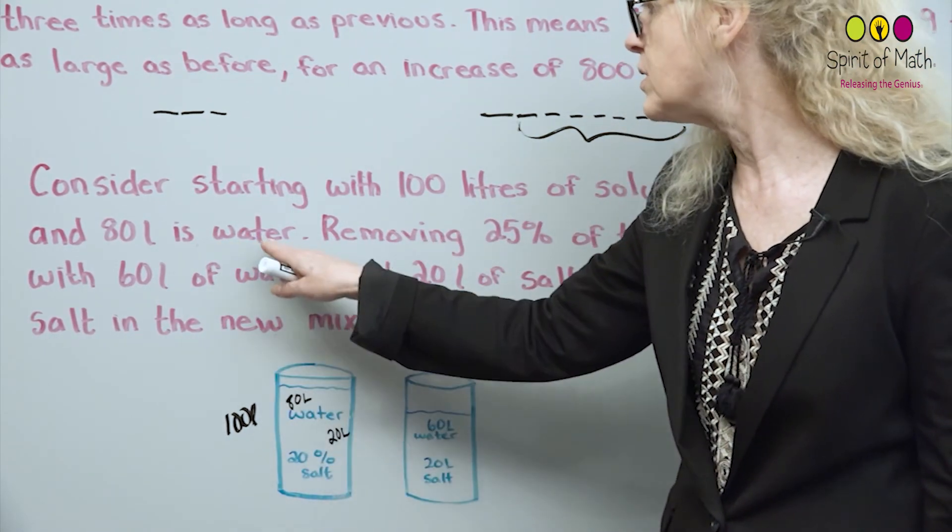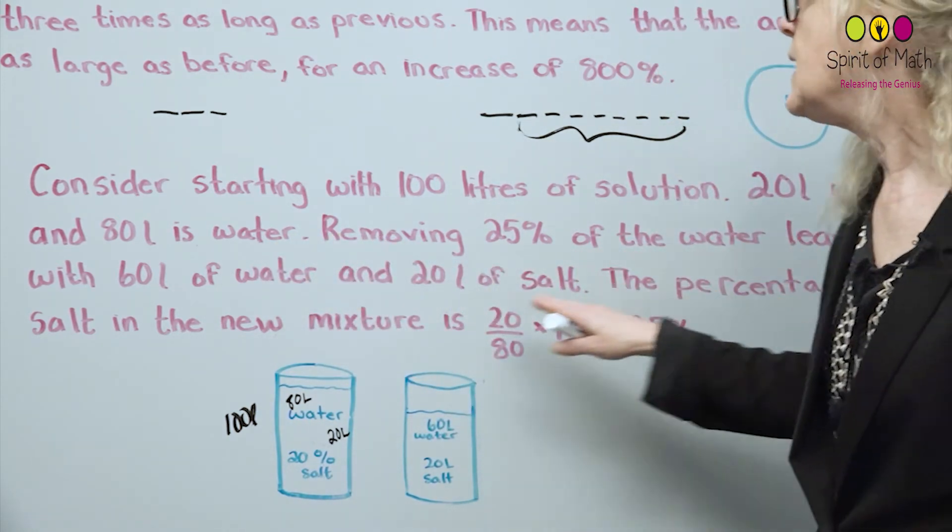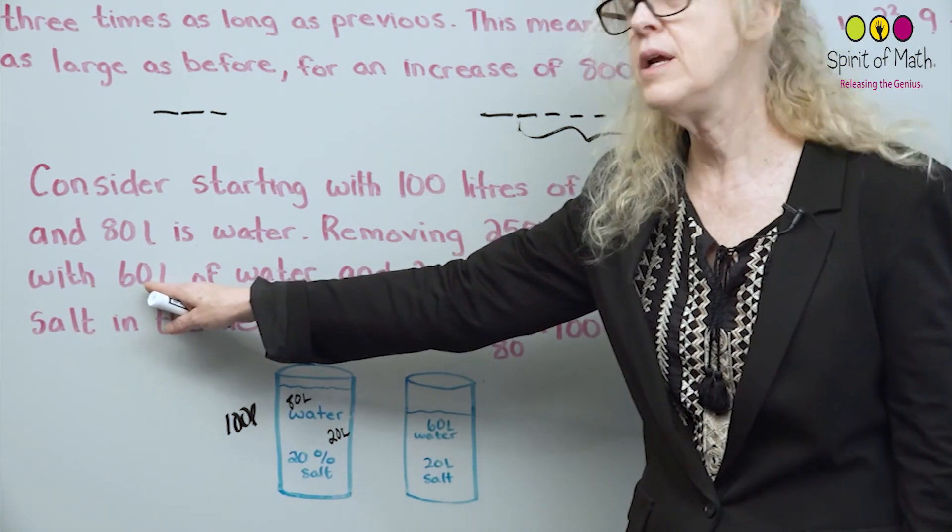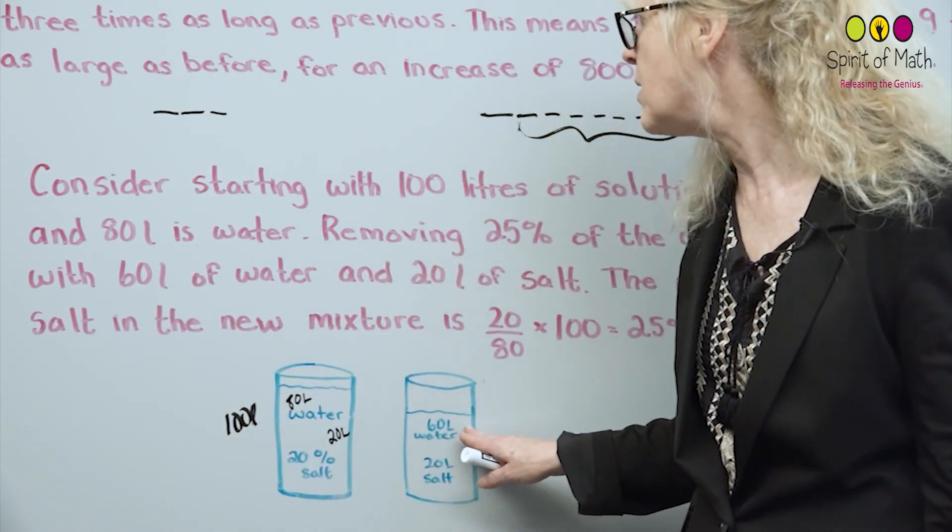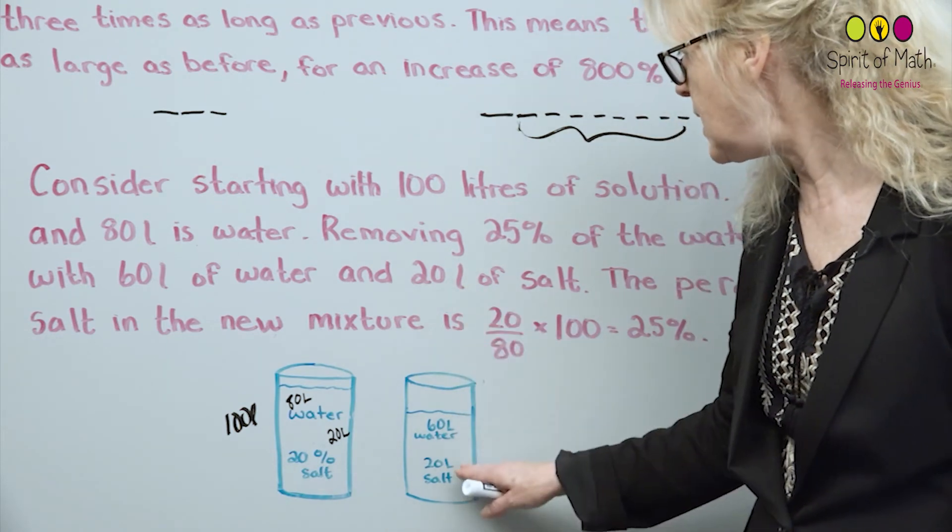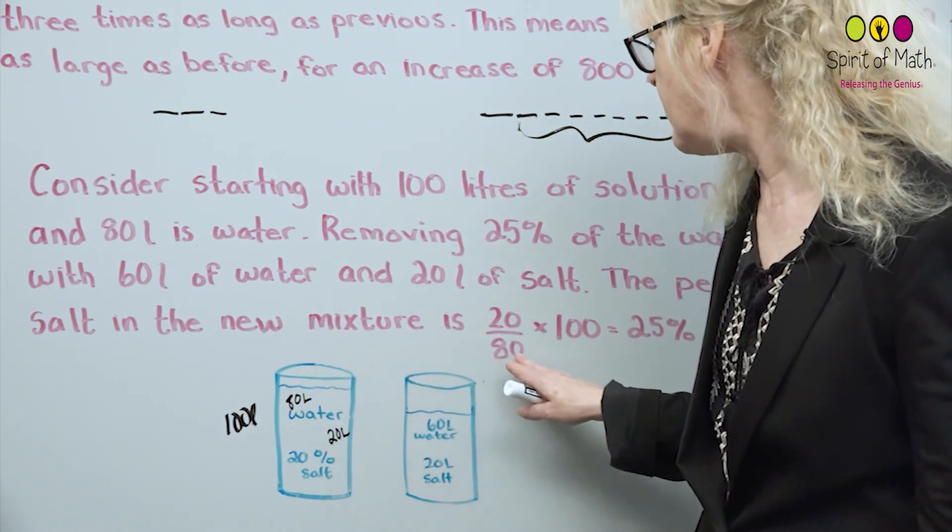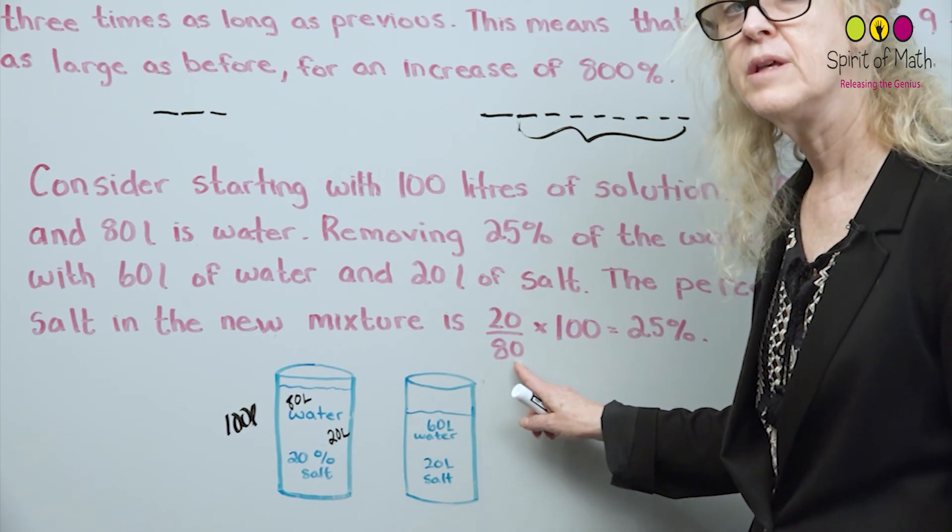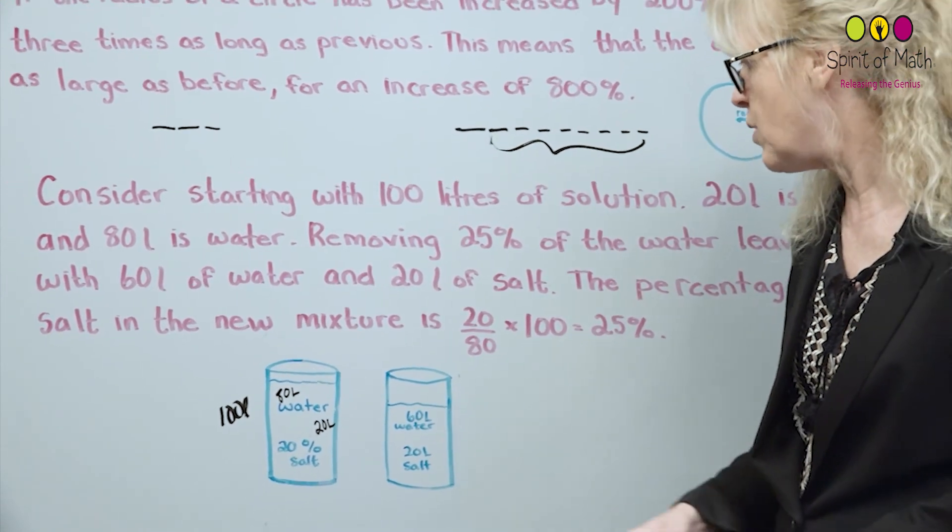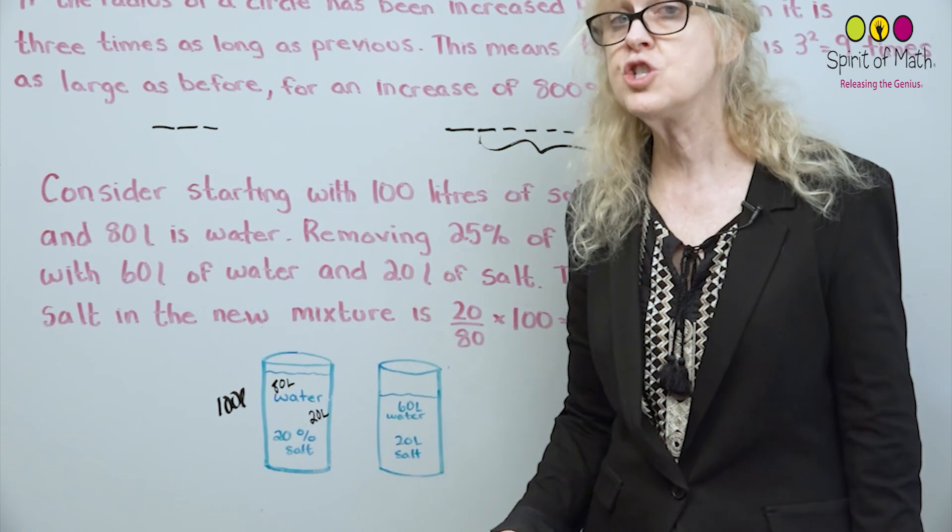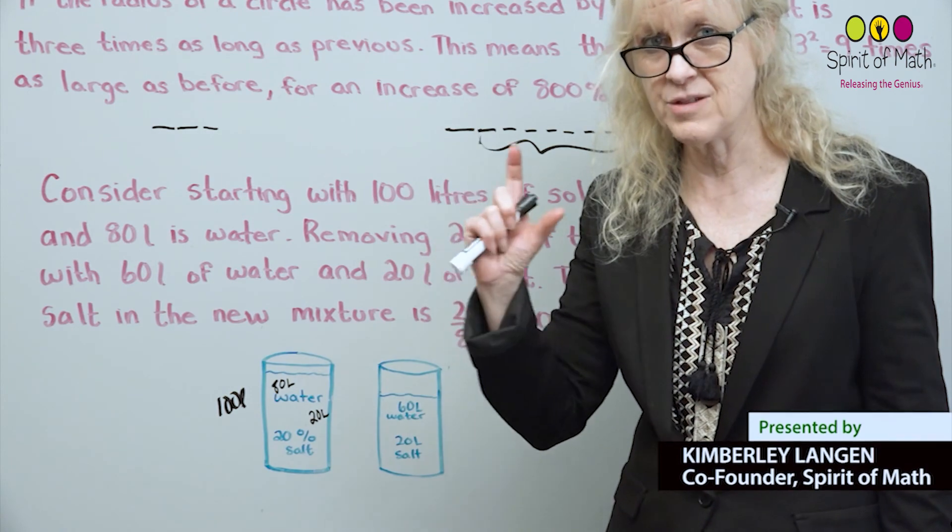And again, the 100 works nicely, that's why we're using it. So removing 25% of the water leaves us with 60 litres of water. So 0.25 times 80 gives you 60. So you basically have 60 litres of water, but you still have that 20 litres of salt that you started with because you're not changing that. So the percentage of salt in the new mixture is 20 over 80, so 20 of 80 times 100, which is 25%, and that's what you're left with. So you started with 20%, ended up 25%. That should make sense to you, because it should be more concentrated salts because you have less water.